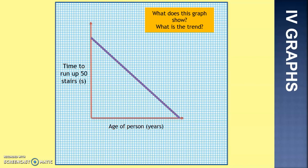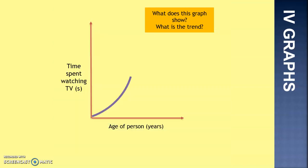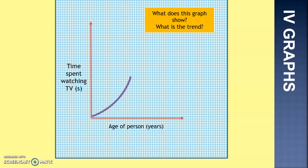Second graph: what does it show and what's the trend? You need to be looking at the axes. As the age of the person goes up, the time to run up 50 stairs decreases. Final graph: as the age of the person increases, the time spent watching TV increases. This isn't directly proportional though, as the line is a curve — it increases by increasing amounts.